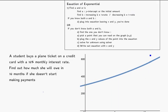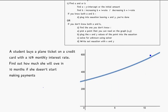Next example. A little bit of a word problem here. A student buys a plane ticket on a credit card with a 10% monthly interest rate. I know that an interest rate on a credit card means it's going to be increasing, and I can see that on the graph. So I take 10%, convert it to decimal, 0.10. Since it's increasing, it's 1 plus 0.10, so I get 1.10 as my b.